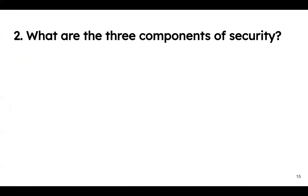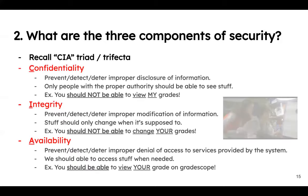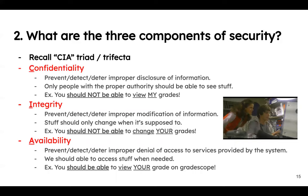Free response: what are the components of security? CIA — confidentiality, integrity, and availability. Don't forget your triad. For example: confidentiality means you should not be able to view my grades — only people with proper access should. Integrity means you should not be able to change your grades. Availability means you should be able to see your grades on Gradescope.